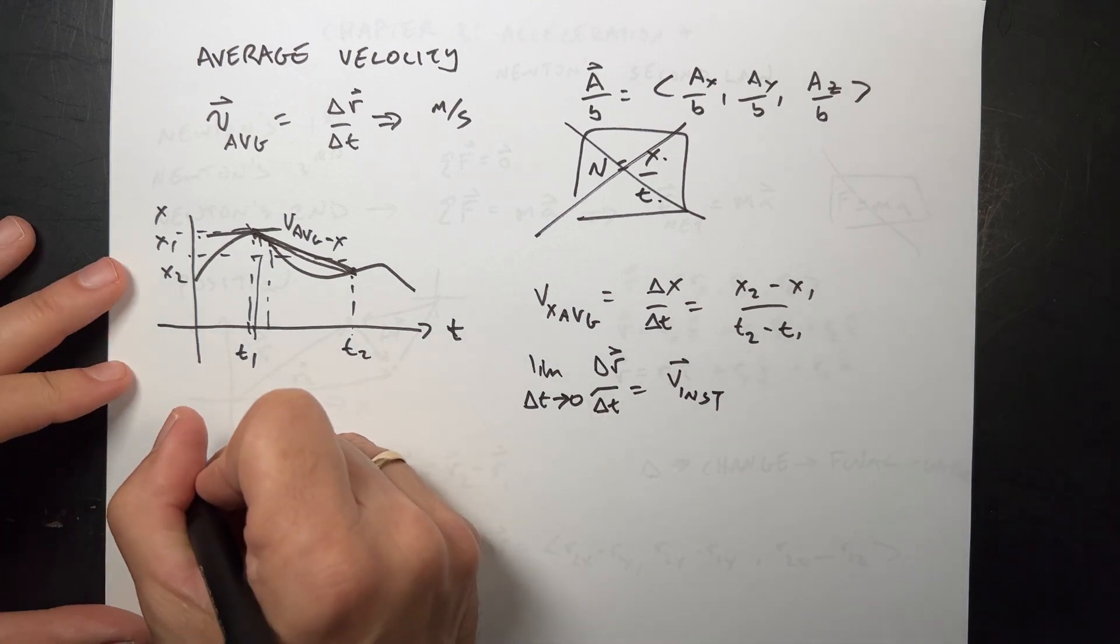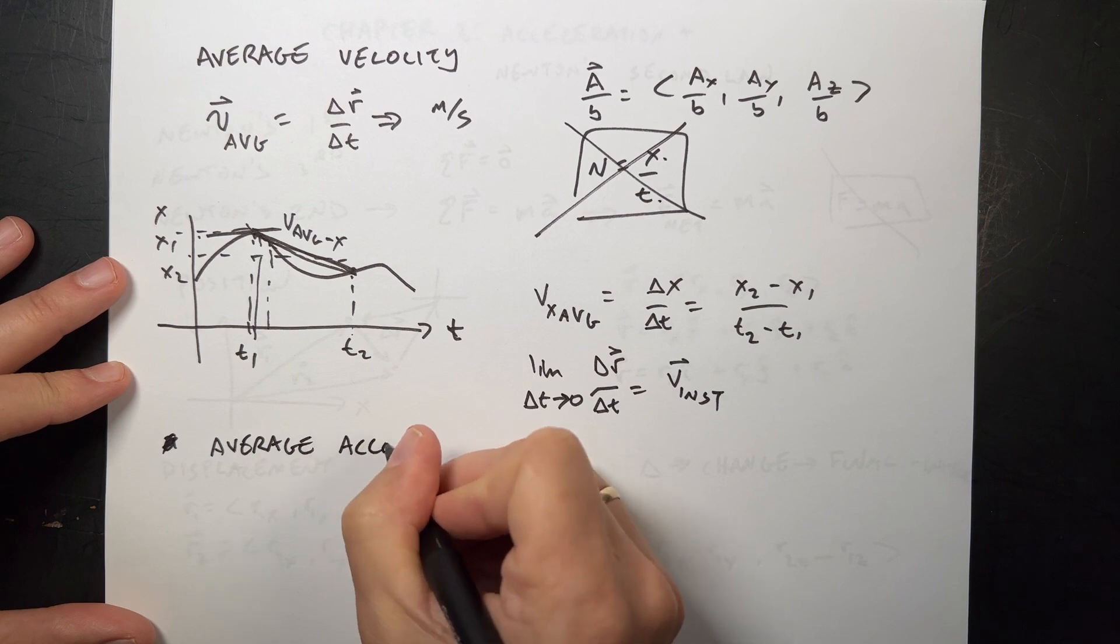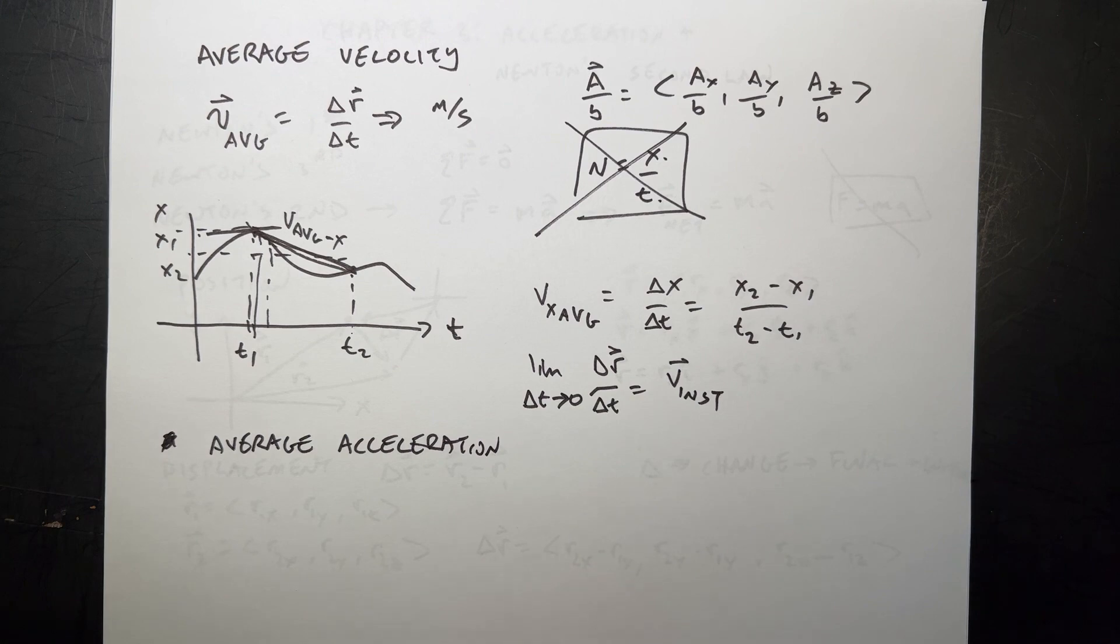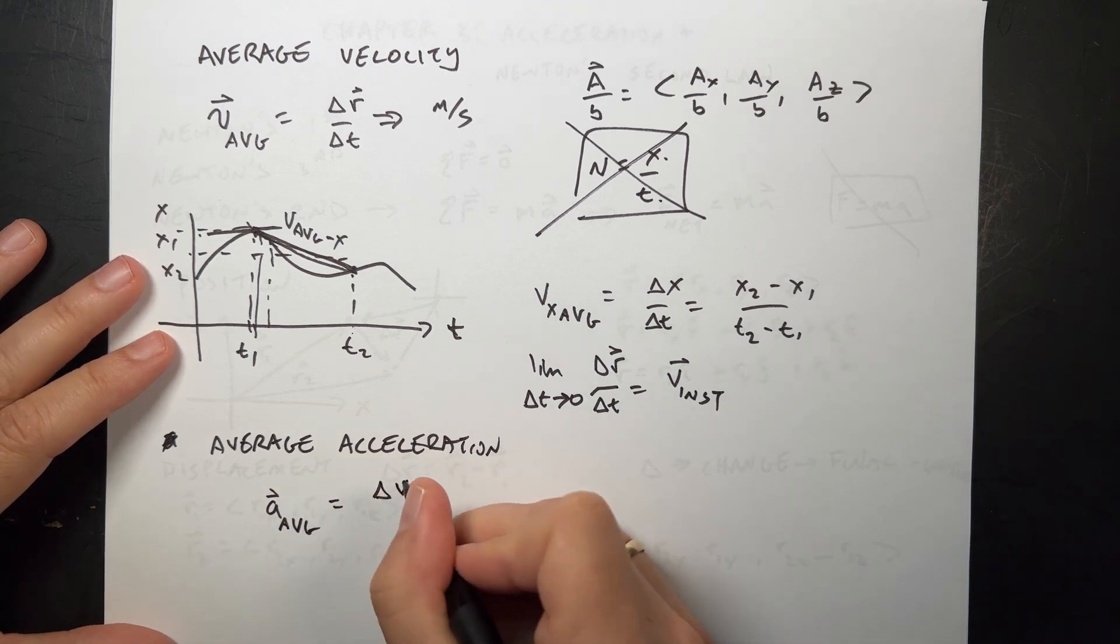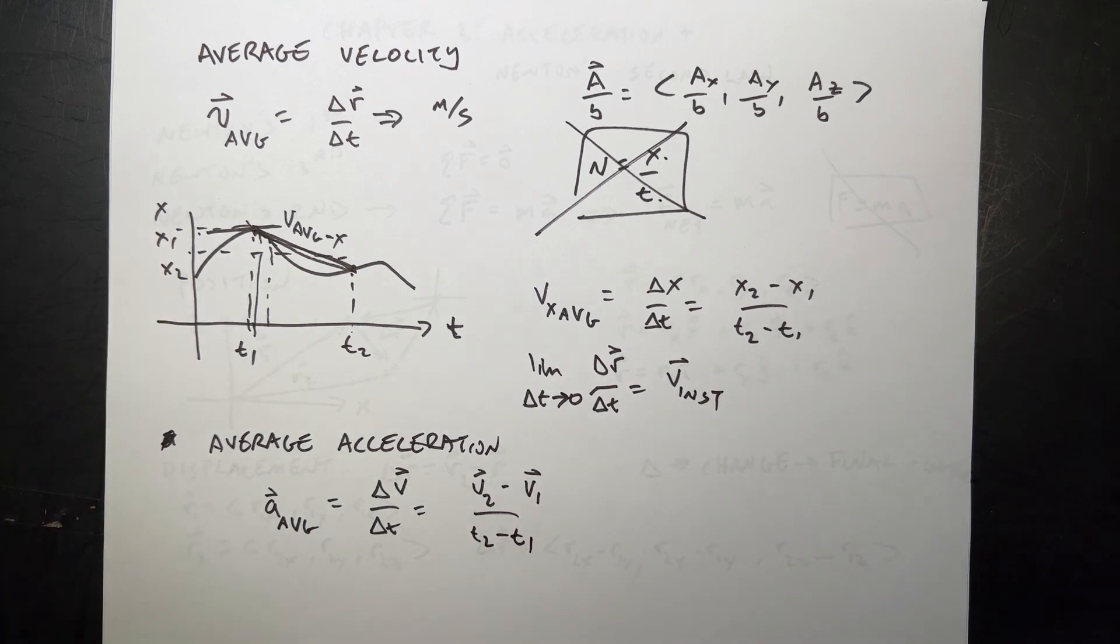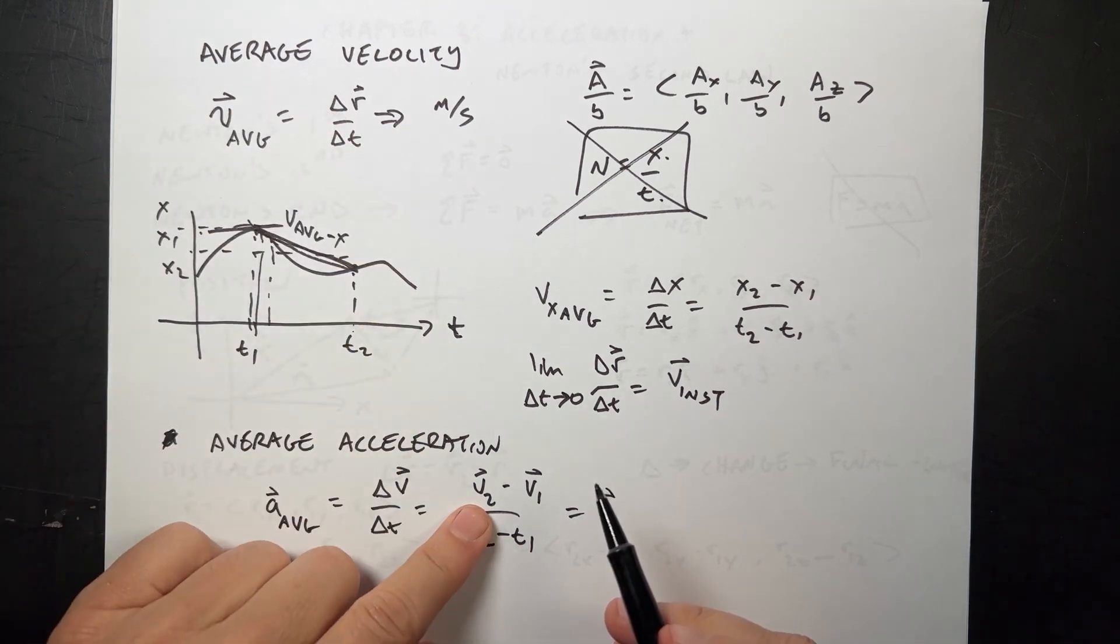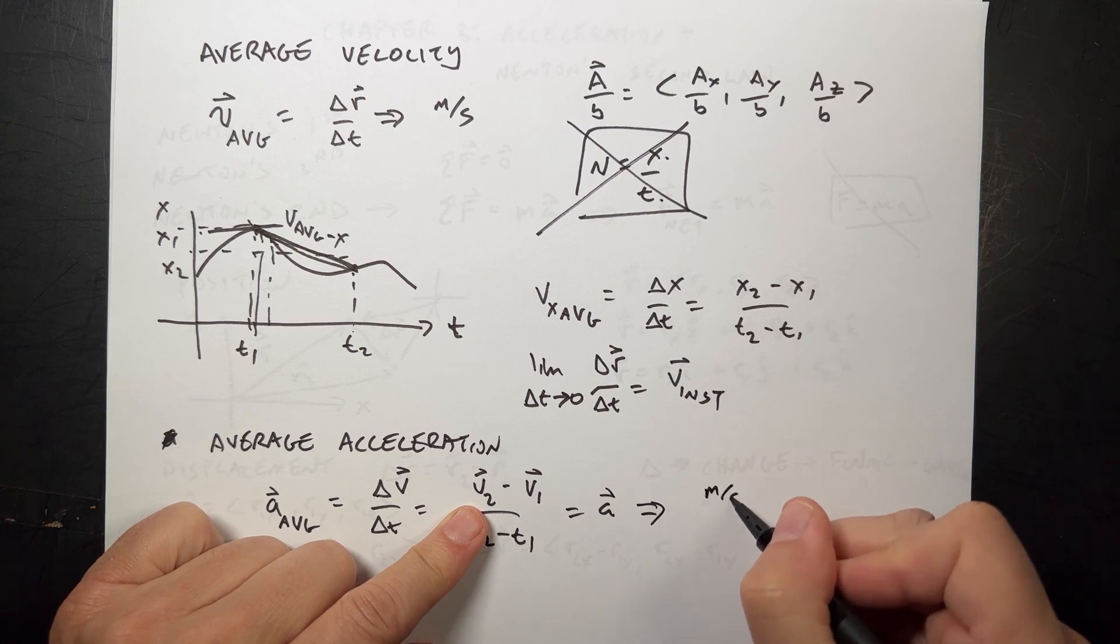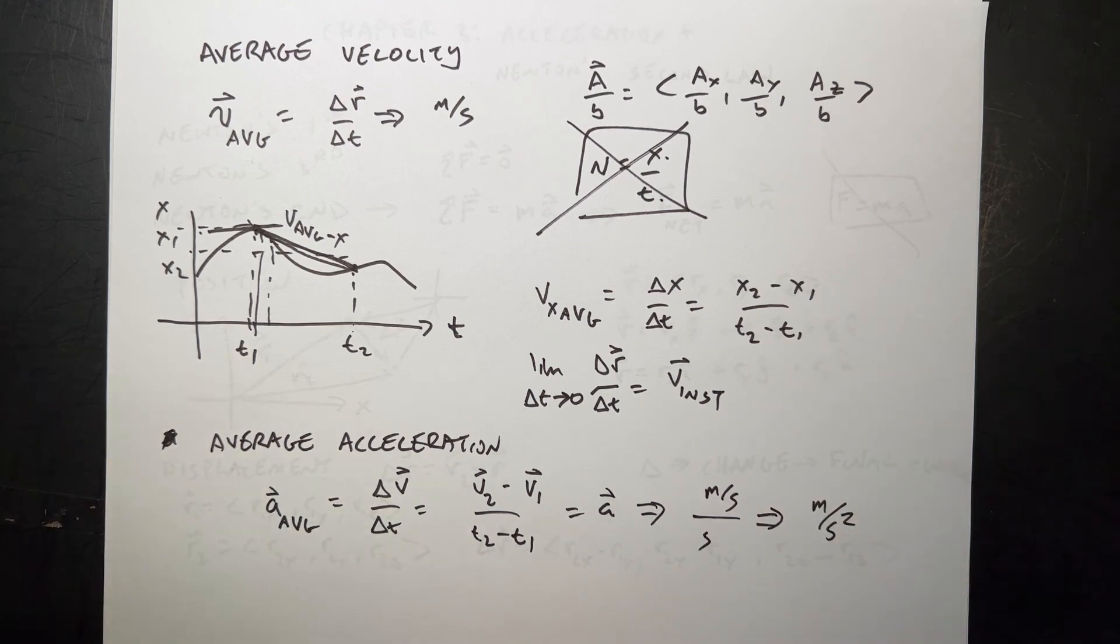The important thing is that just like slope depends on a change in position, velocity depends on a change in position too. Now we can use that to define average acceleration. Average acceleration, we define this as how the velocity changes. So A average is the change in velocity with respect to time. It would be V2 minus V1 over T2 minus T1. We're going to deal with situations where the average acceleration is constant, so it's the same as the instantaneous in almost every single case. This is change in position with respect to time in meters per second. This is change in velocity with respect to time, which is meters per second per second, and we'll often write this as meters per second squared.